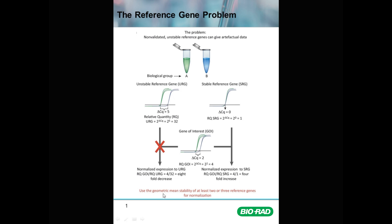It's important to use the geometric mean stability of at least two or three reference genes for normalization, as per the initial van de Peer paper that describes this approach.